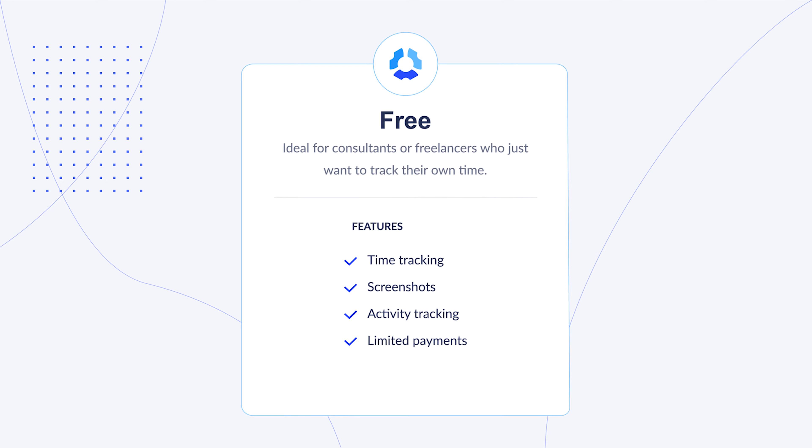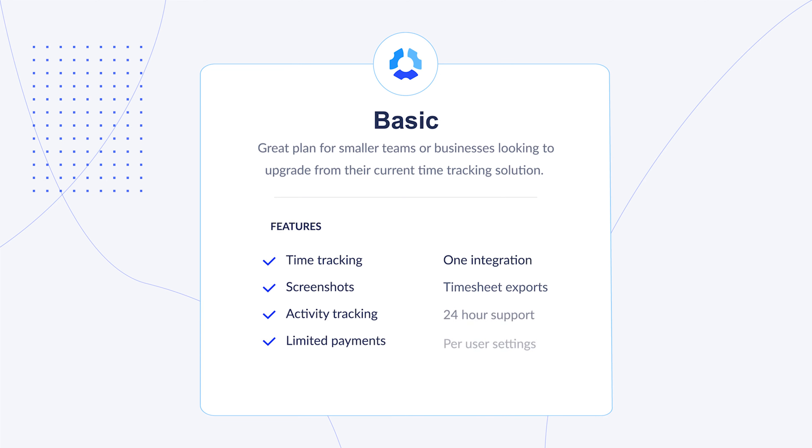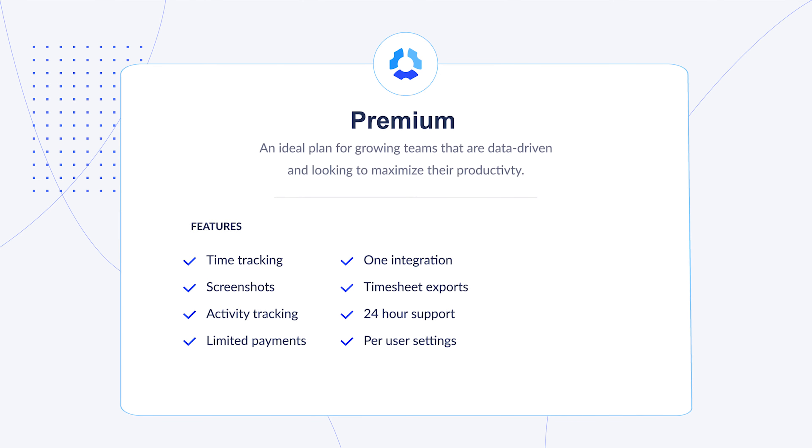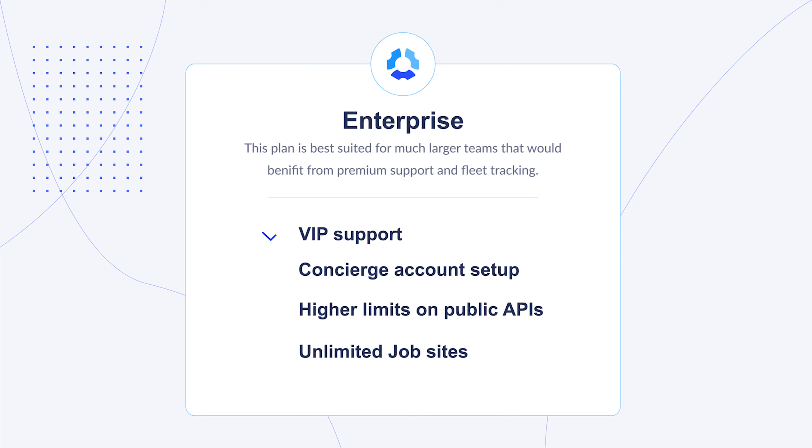As far as pricing goes, you have four plans to choose from, and which plan you choose will really depend on the size of your team. We have the free plan, which is ideal for freelancers; the basic plan, which starts at $7 a user per month; the premium plan starting at $10 a user per month; and the enterprise plan, which is $20 a user per month. I'll have a link down below in the video description for a more detailed breakdown of the different plans Hubstaff offers.